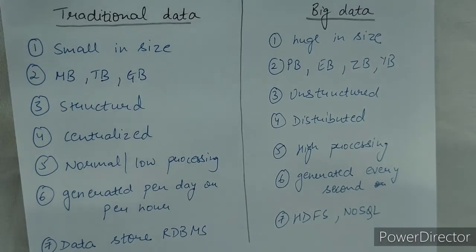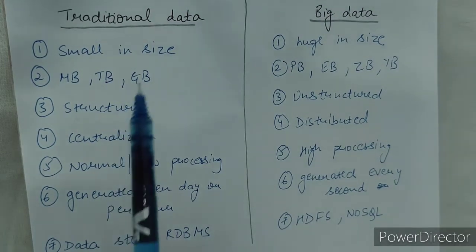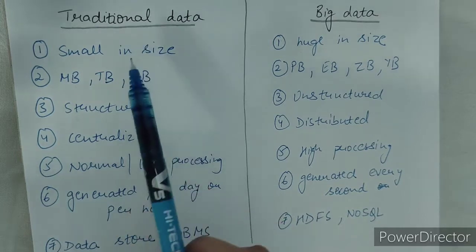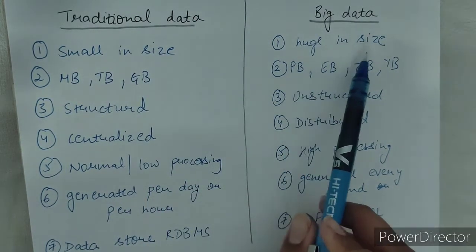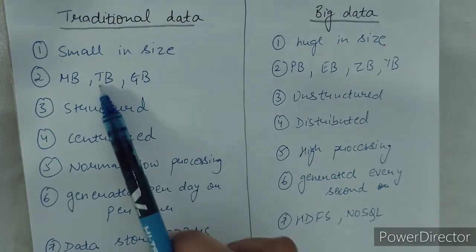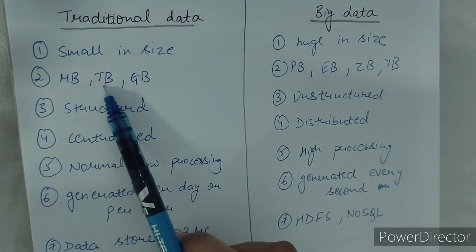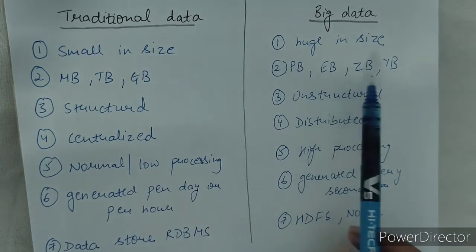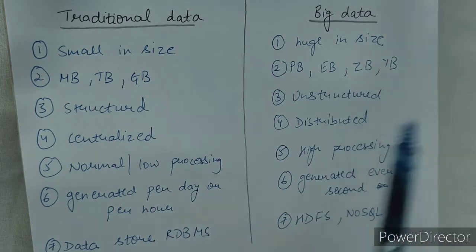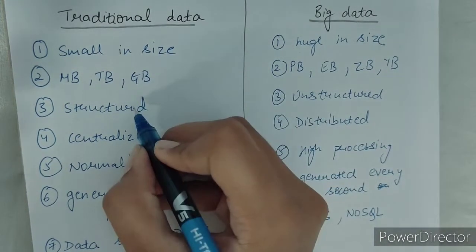Our next topic is the difference between traditional data and big data. Traditional data is small in size while big data is huge. Traditional data can be measured in MB, GB, or TB, whereas big data is in petabytes, exabytes, zettabytes, and yottabytes. Traditional data is in structured form while big data is unstructured.